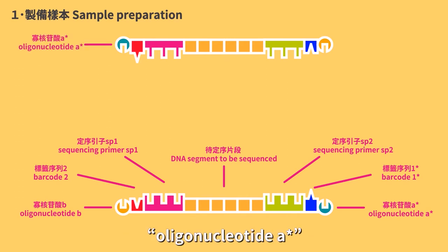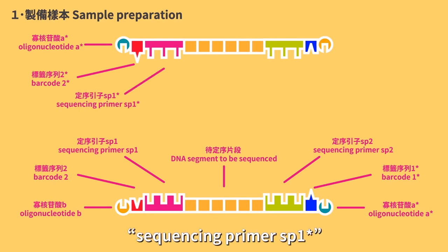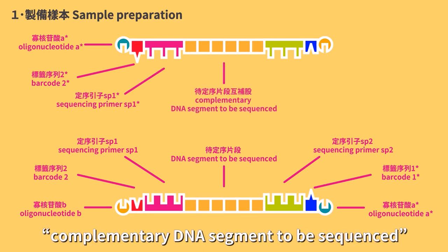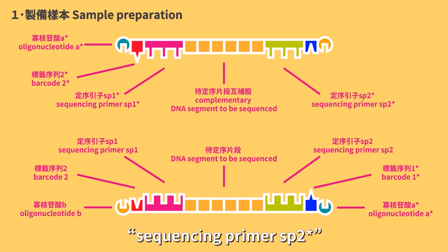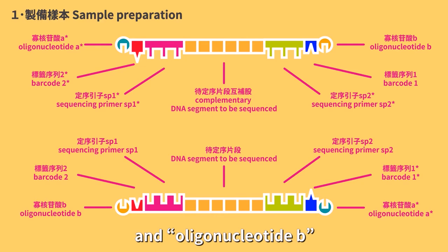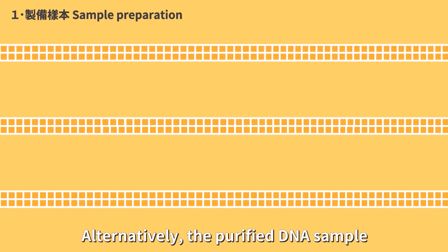oligonucleotide A, barcode 2 star, sequencing primer SB1 star, complementary DNA segment to be sequenced, sequencing primer SB2 star, barcode 1, and oligonucleotide B.